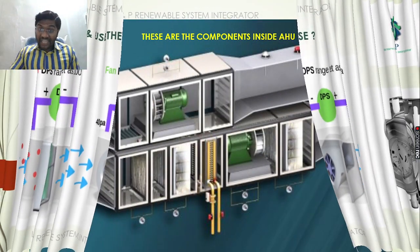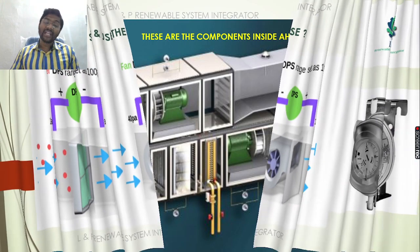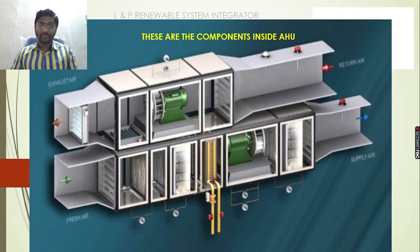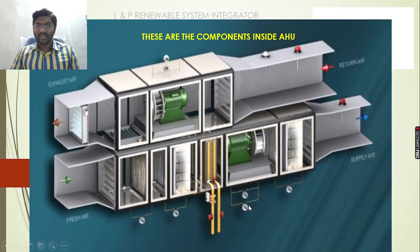Even in air handling units we can install this. This is an example of an air handling unit — differential pressure switches are being installed here.